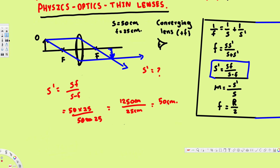Since we get a positive answer, this is a real image. From the diagram, we can already see the image forms behind the lens, confirming it is a real image. We can also determine that the image is inverted using the magnification equation. The magnification is m = −s' / s.